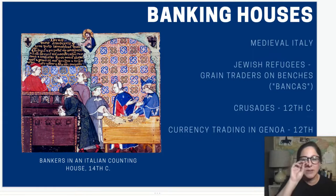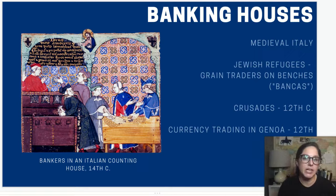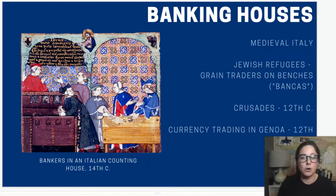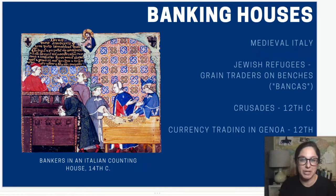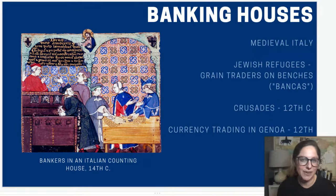Banking houses rise up in Italy in kind of the medieval era, during the early Renaissance, and partly thanks to the Crusades. What we mean by banking houses are places whose entire job is to exchange goods for currency and make money off that endeavor. It really gets promoted when Jewish refugees arrive in Italy after being expelled from places like Spain during the Reconquista. In Christianity — especially strict medieval Christianity — Christians could not practice usury, meaning charging interest to make money. So if I loan you $100, the Catholic church wanted you to do it out of the goodness of your heart. But really, why would you take that risk if you're not going to get anything back?